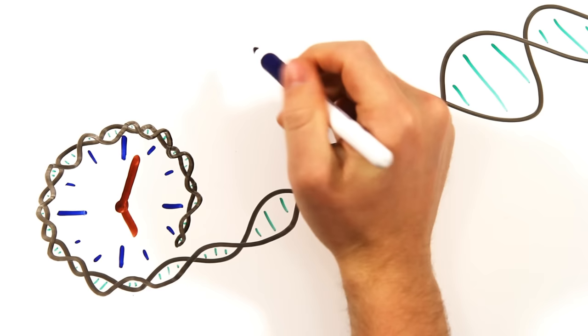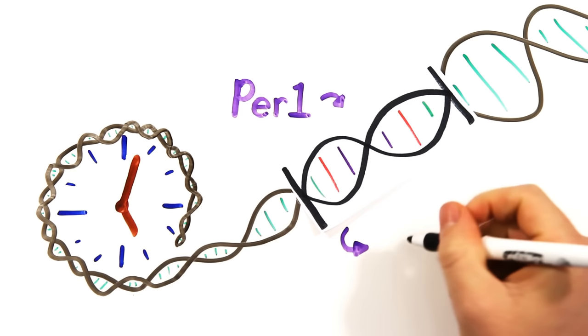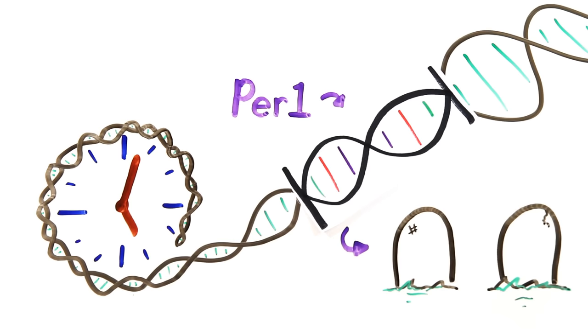As crazy as it seems, scientists also found a correlation between these same genes and your time of death. The early risers were more likely to die around 11am, while the night owls were more likely to die before 6pm.